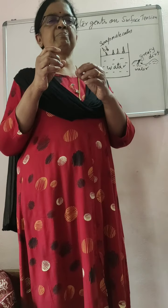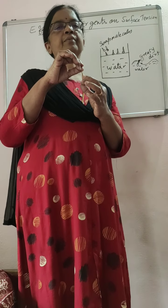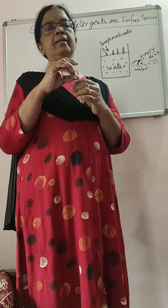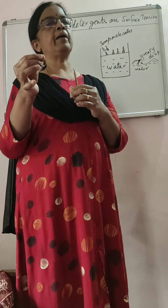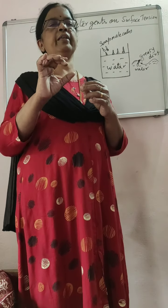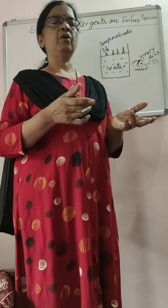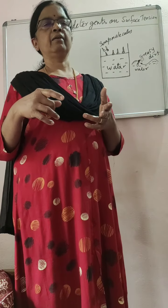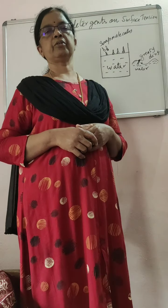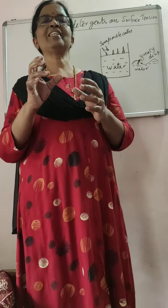Now the greasy stain is held suspended. One part — the head part — is attached to the water, and the tail part is attached to the greasy stain. So there is an interface between the greasy stain and water. When we use a washing machine or simply rinse in water, that stain can be removed easily. By adding detergents, surface tension is reduced.